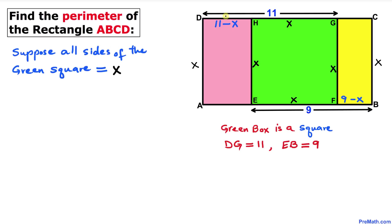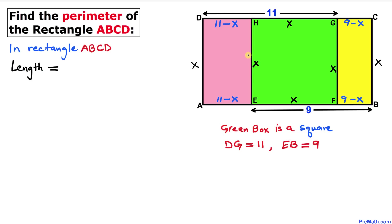Now let's focus on the pink rectangle. This side length is the same as the corresponding side, so it has to be 9 minus x as well.